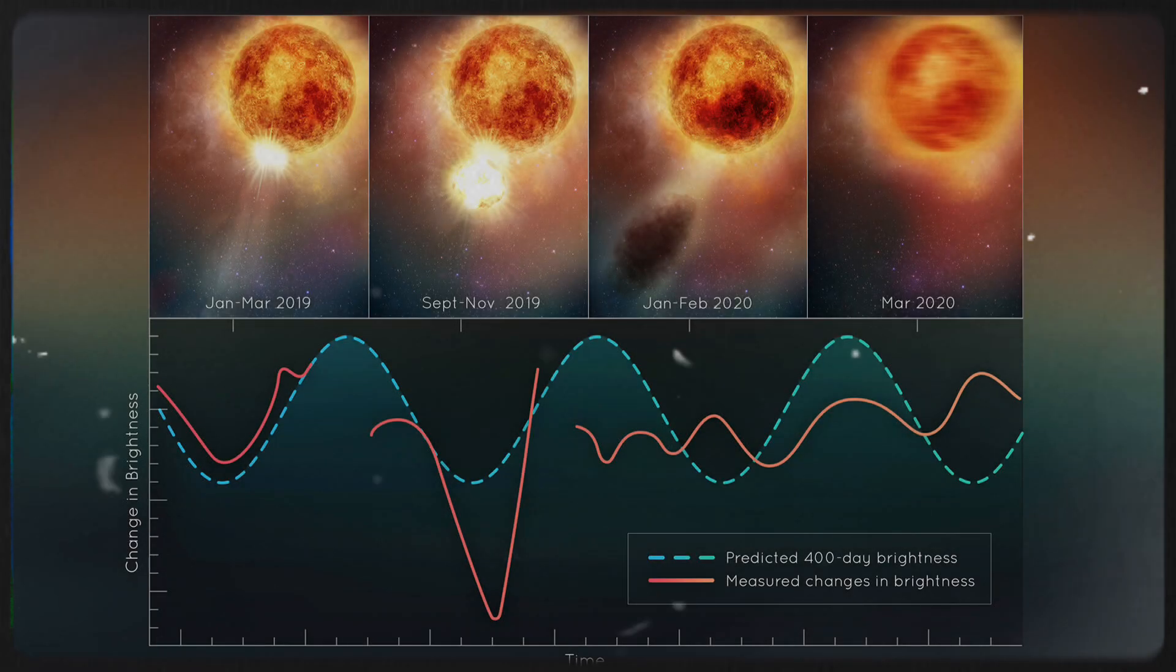These observations detected dense hot matter moving through the star's atmosphere. Around December 2019, ground-based telescopes also caught sight of the dimming, particularly in Betelgeuse's southern region.